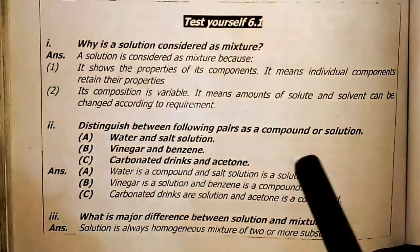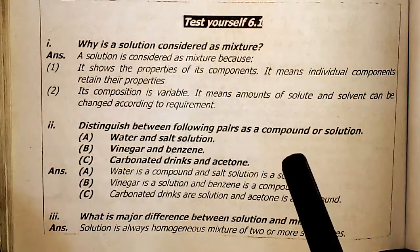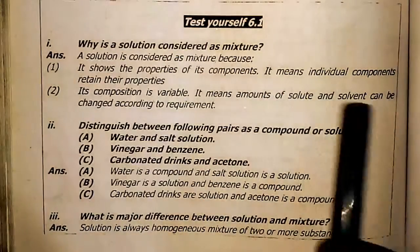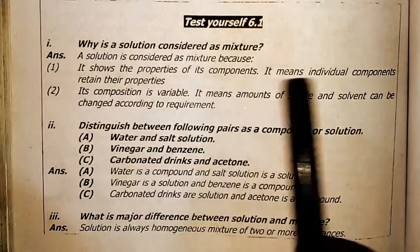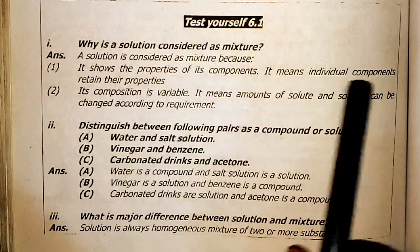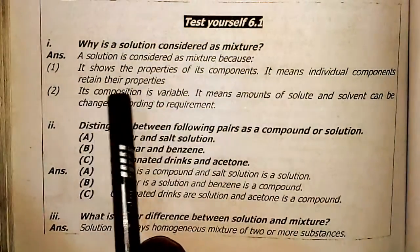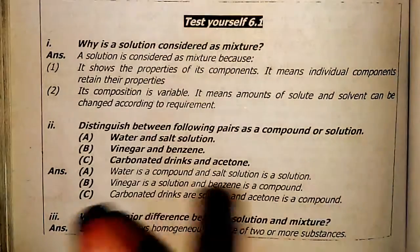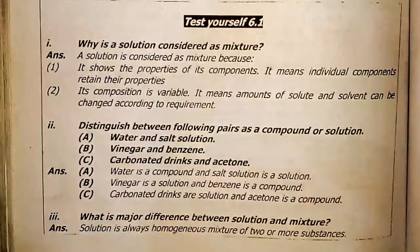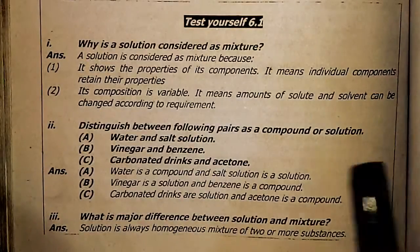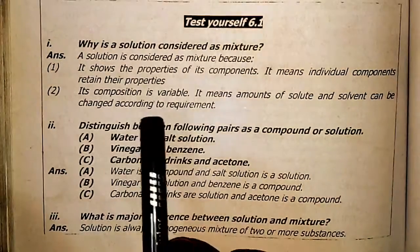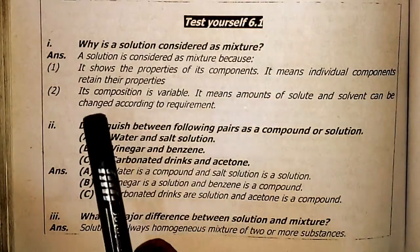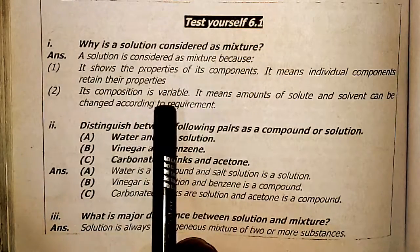It is definitely a mixture where two different components are mixed, so the properties of components show — meaning individual components retain their properties. For example, sugar and water: sugar remains sugar, water remains water. So components retain their properties.